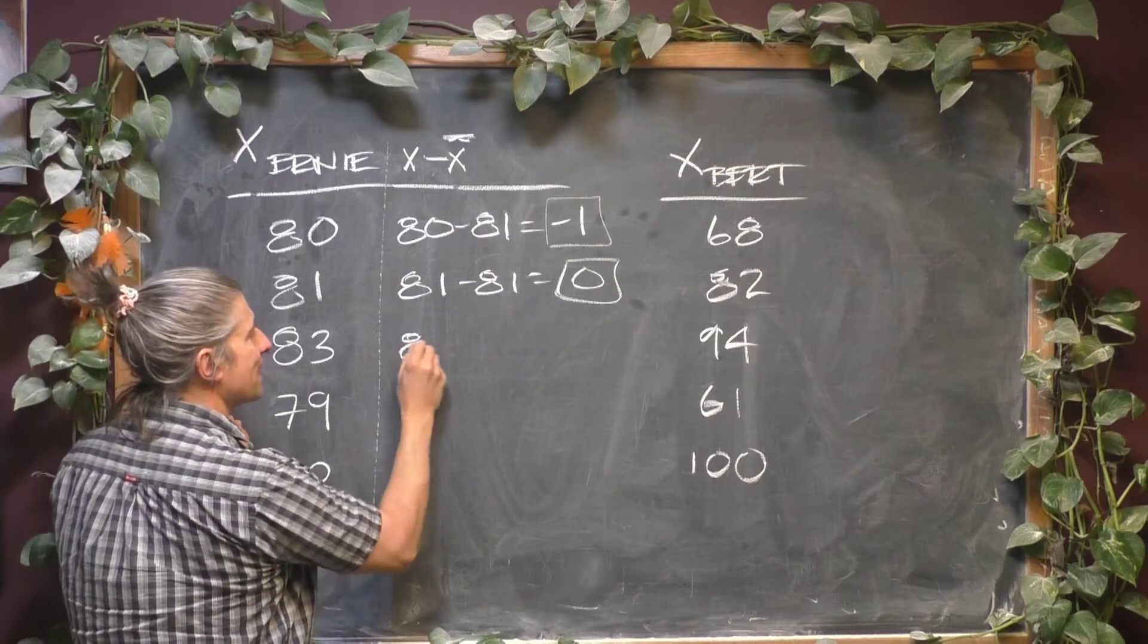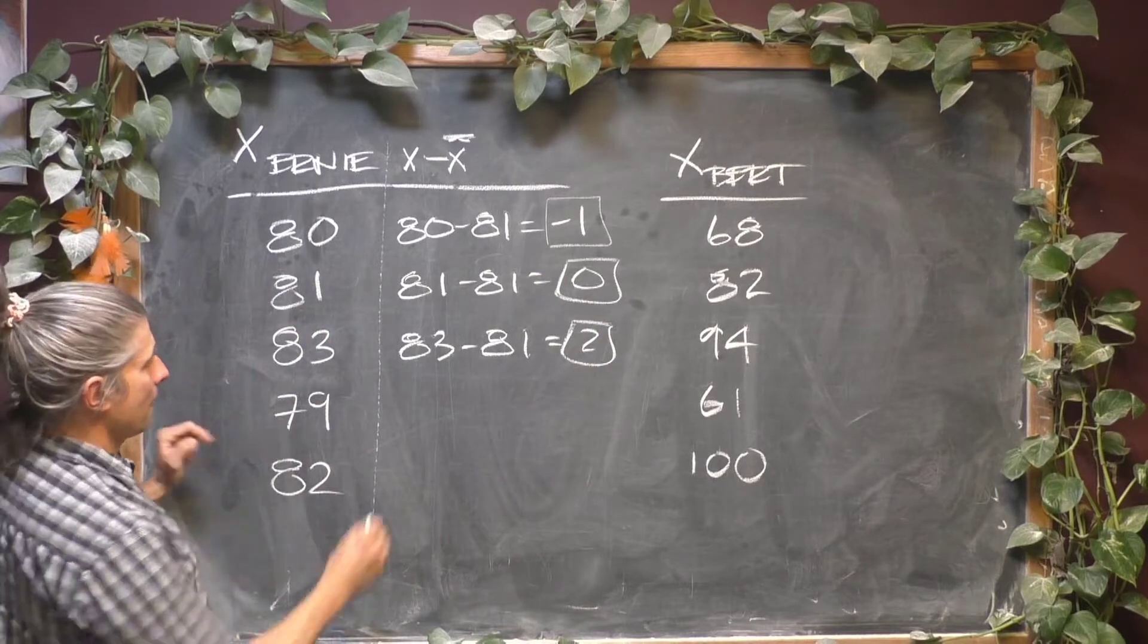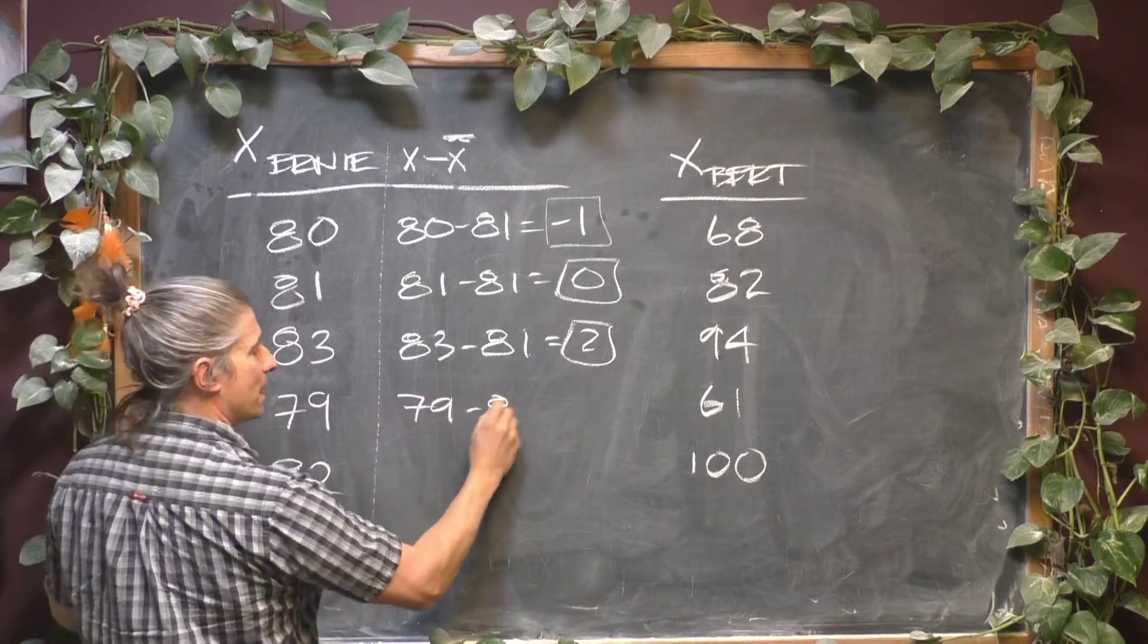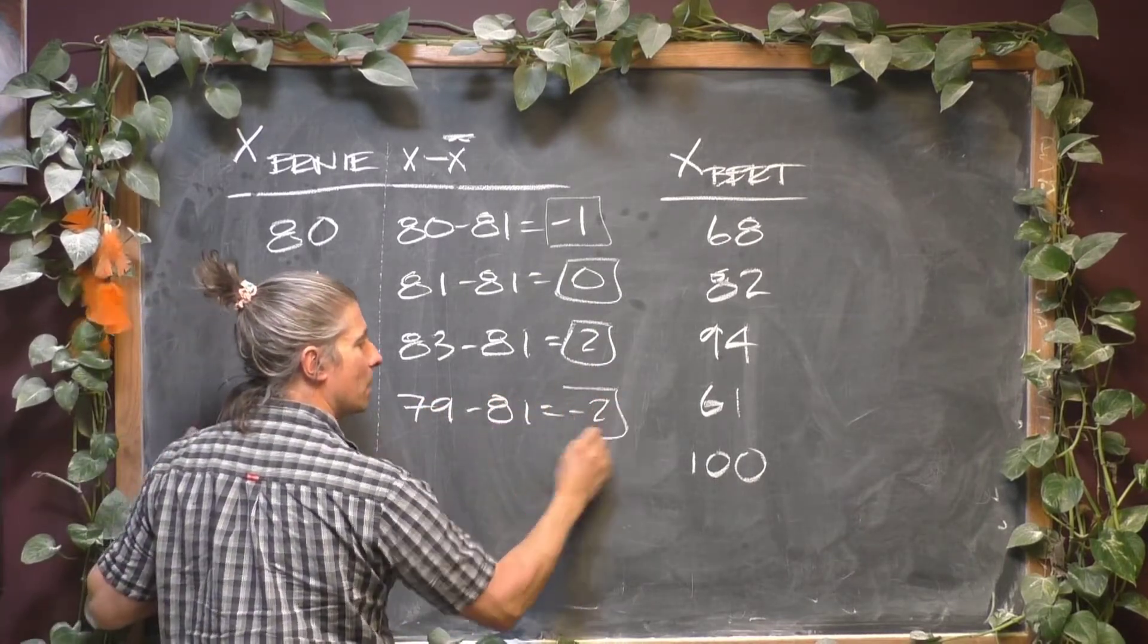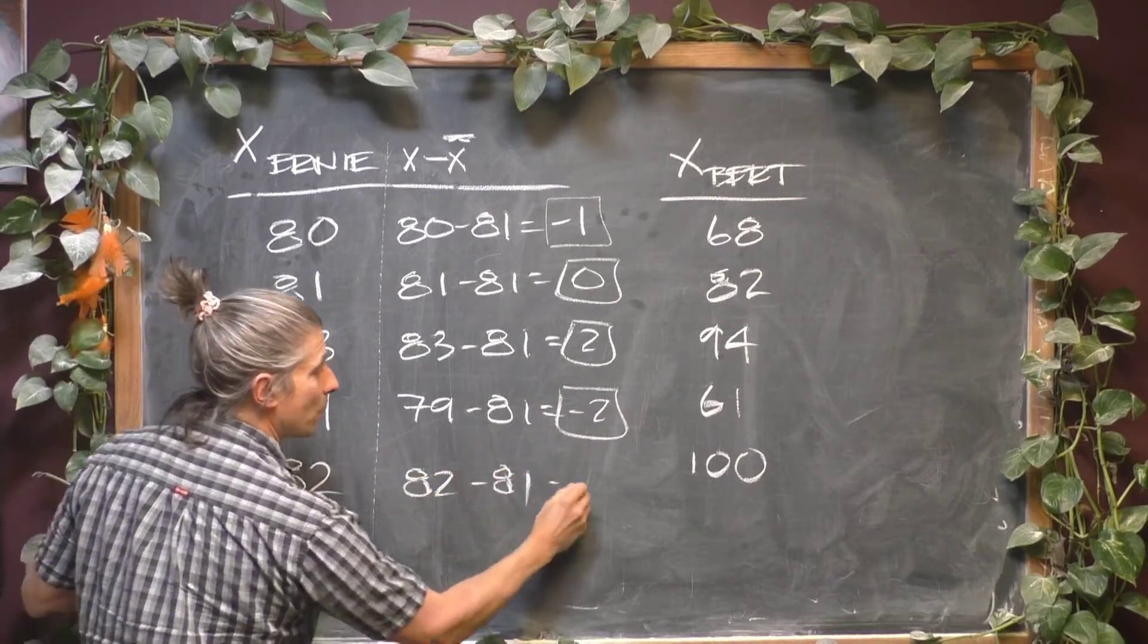83 minus 81 is going to be positive 2, it's 2 above average. 79 minus 81, negative 2, 2 below. And 82 minus 81 is going to be 1 above.